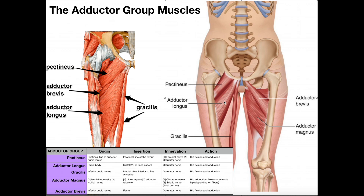The second muscle is the adductor longus. Its origin is up on the pubic body, medial to that of the pectineus. As it extends toward the insertion, it actually gets thicker, and its insertion is on the distal two-thirds of the linea aspera of the femur. In terms of action, it's going to be basically the same as the pectineus — of course, it's an adductor, but because the insertion is slightly more anterior, it's also going to have some degree of hip flexion.